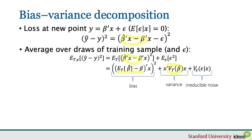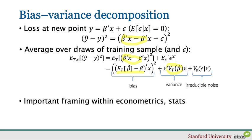This bias-variance decomposition is an important framing of the challenge of good prediction. It shows that when my interest is good prediction, an unbiased estimator is not necessarily optimal, because while the bias component is zero, the variance component may be higher than necessary. I can sometimes do better by balancing the two — by resolving the bias-variance tradeoff optimally.